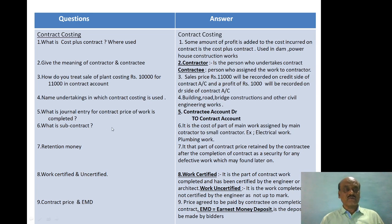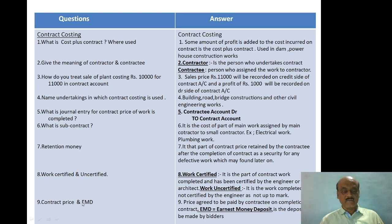Next topic: contract costing. Probable questions include: what is cost plus contract and where it is used, meaning of contractor and contractee, how to treat sale of plant costing ₹10,000 for ₹11,000 in contract account, undertakings where contract costing is used, journal entry for contract price when work is completed, what is subcontract, retention money, work certified and uncertified, contract price, and EMD (Earnest Money Deposit). Cost plus contract means some amount of profit is added to the cost incurred on the contract.